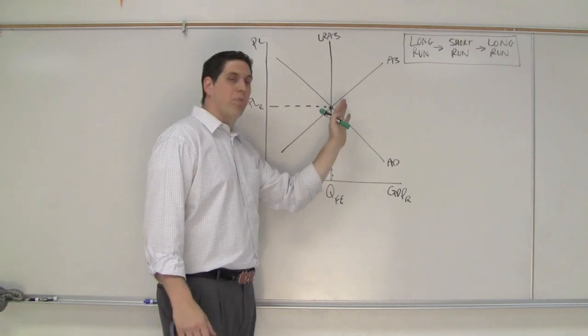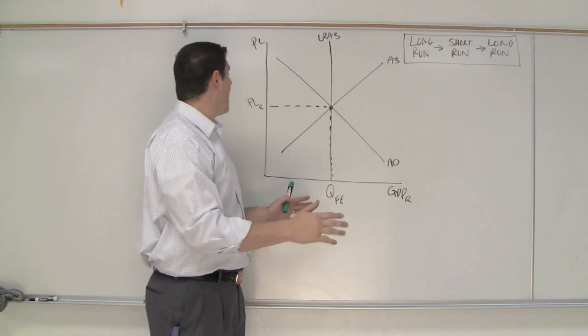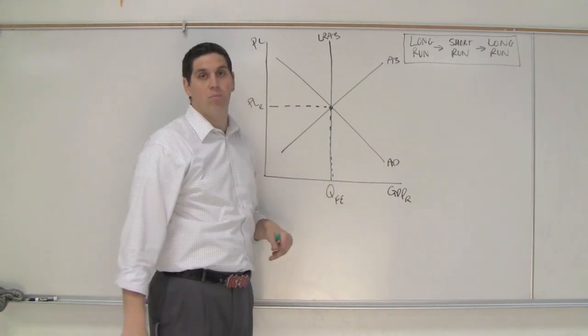You already know about aggregate demand and aggregate supply. Aggregate demand is the demand for everything. Aggregate supply is the supply of everything in our entire economy. Right now you see our price level and our current output are GDP at full employment.